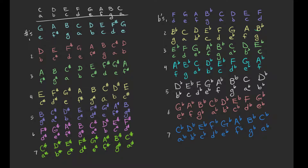Here's a complete list of all the scales we've talked about so far — major and minor — sorted by sharps and flats and paired up with their major and minor counterparts. If they have the same notes, they're called relative scales. Relative simply means two scales with the same notes.